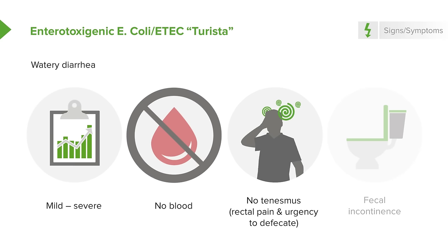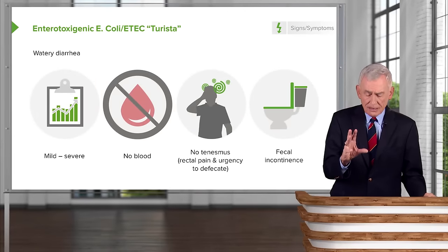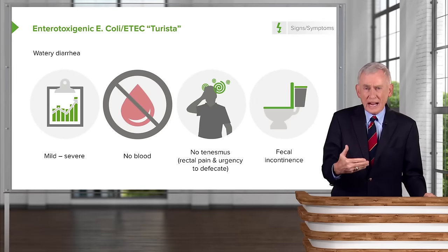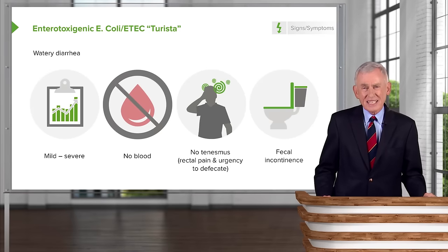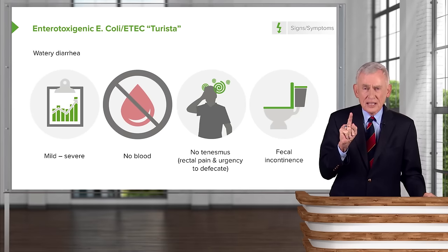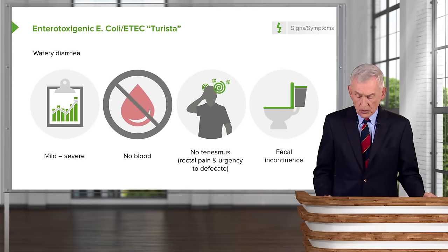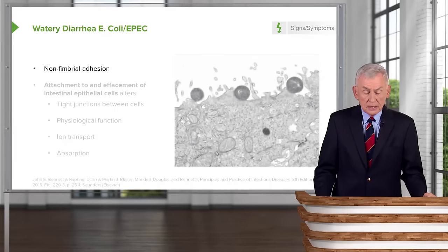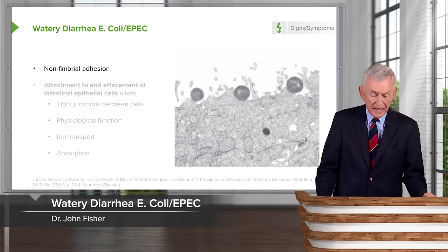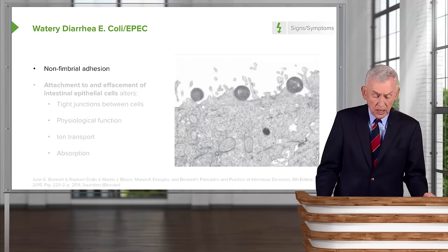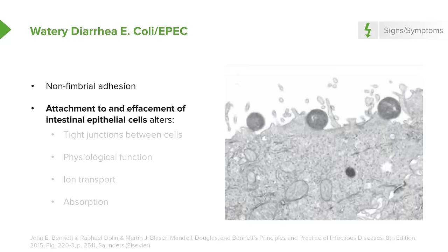There's no tenesmus in turista. Tenesmus is either rectal pain — sometimes severe — or the constant feeling around the rectum of the urgency to defecate. This is a helpful sign to distinguish watery diarrhea from invasive colitis. Enteropathogenic E. coli works by a different mechanism — it attaches to epithelial cells, alters the tight junctions between cells, and alters their physiologic function, leading to problems with ion transport and a malabsorption form of watery diarrhea.